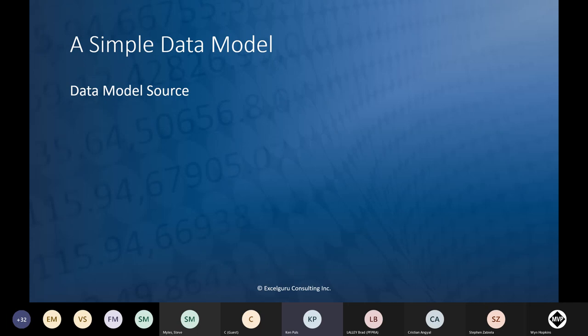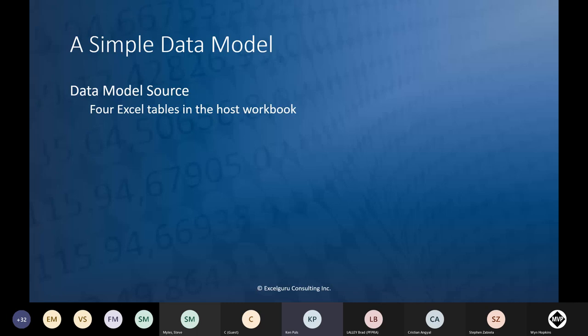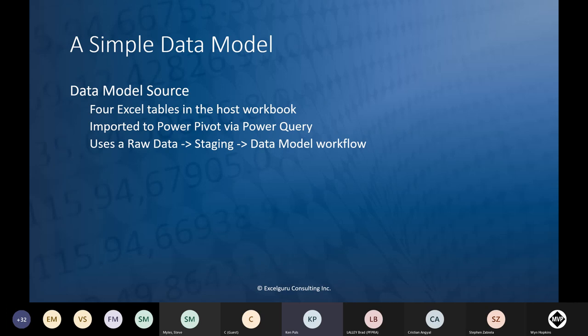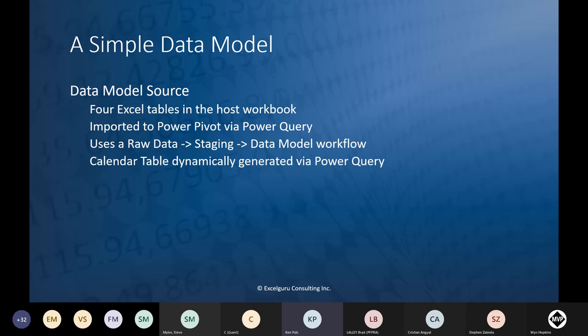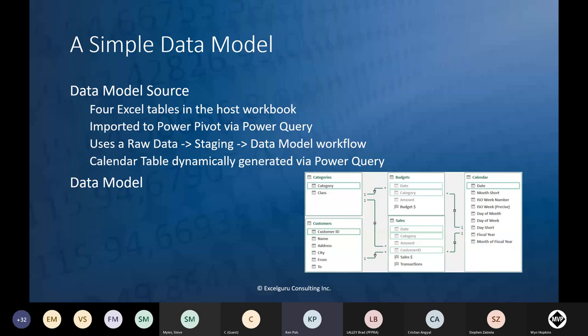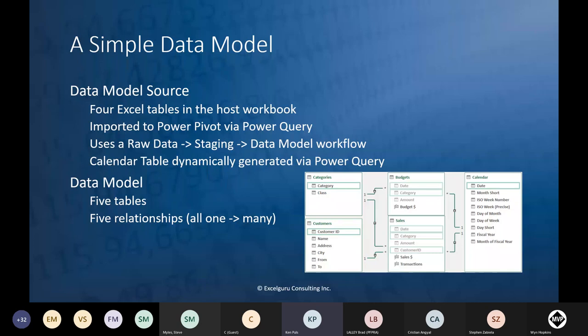In the data model we relate tables together, create DAX formulas, and then create visuals. The source for this simple demo has four Excel tables living inside the host workbook. All data is imported to Power Pivot via Power Query using the raw data, staging, and data model workflow. There's also a calendar table built dynamically via Power Query. The data model has five tables, five one-to-many relationships, three measures: budget dollars, sales dollars, and transactions.